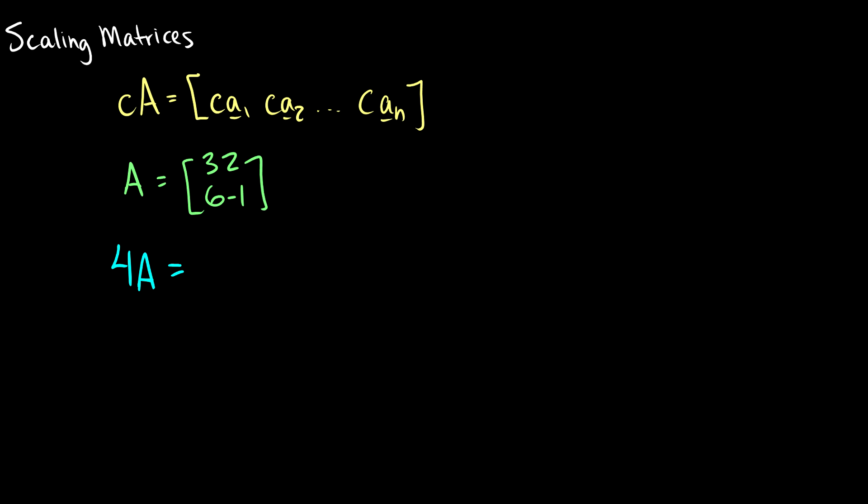So A is 3, 2, 6, -1. So we have 4 times A. This is just 4 times 3, 2, 6, -1. Now we distribute. This is the matrix 4 times 3, 4 times 2, 4 times 6, and 4 times -1. This comes out to 12, 8, 24, and -4. So that's scaling. Adding and scaling, pretty straightforward.